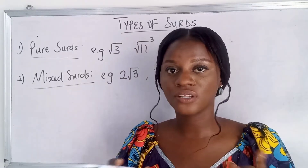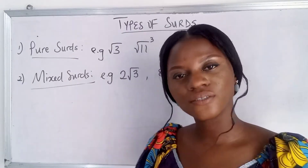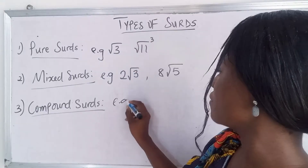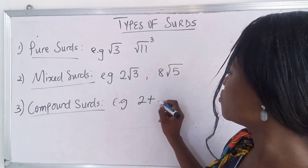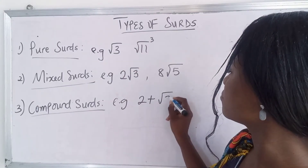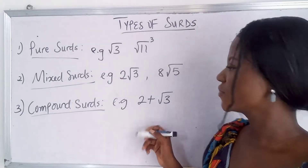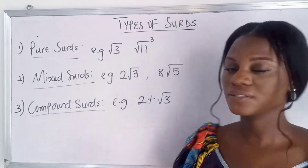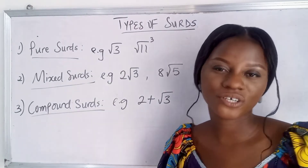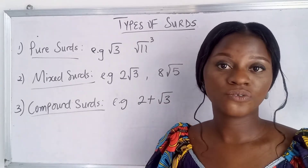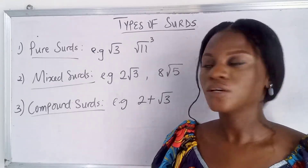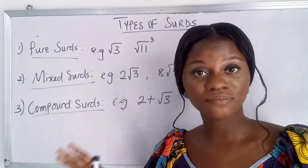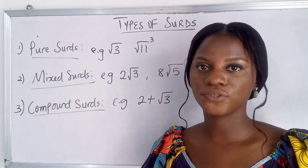The third type is compound surds. You have something like two plus root three, combined with an addition or subtraction sign. These are the three basic types of surds — pure, mixed, and compound — so don't get confused if you see them.